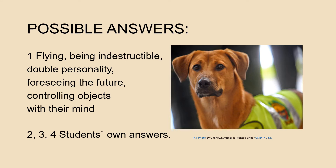Here are some possible answers. The first superpower is the ability to fly. The second one is being indestructible. The third one is having a double personality. The next one is being able to foresee the future. And the last one is to be able to control objects with their mind. I would like to be able to fly because in that way I would avoid the traffic jam on my way to work. And I would like to be able to foresee the future so I could change some unfortunate incidents. I haven't seen the show because I don't like science fiction, but I would like to see it because it seems fun and people have recommended it.